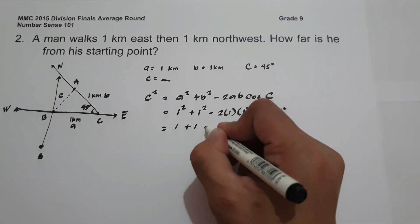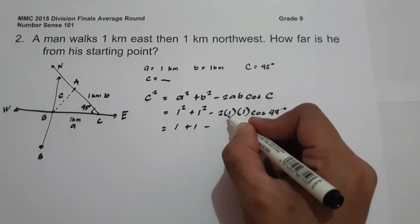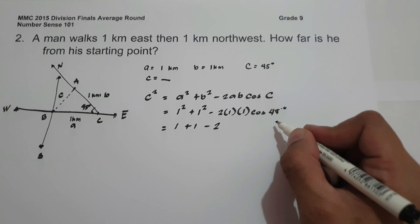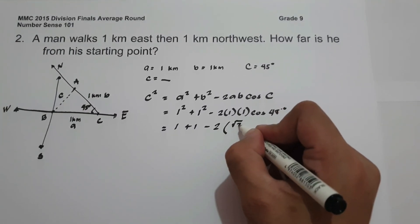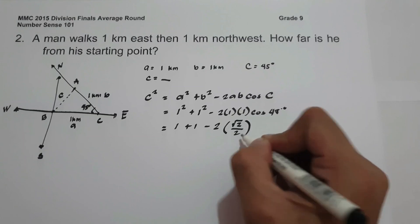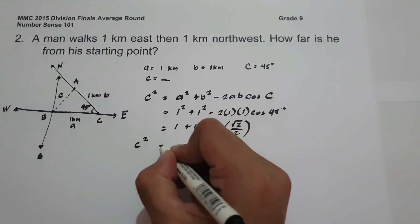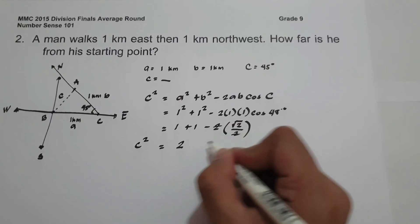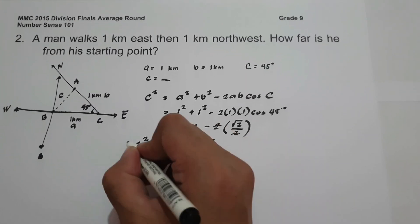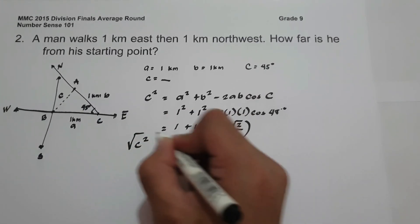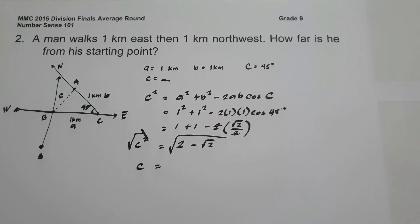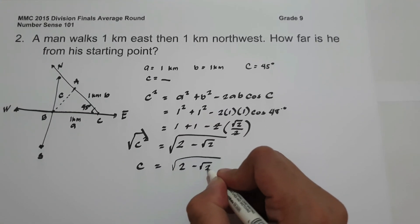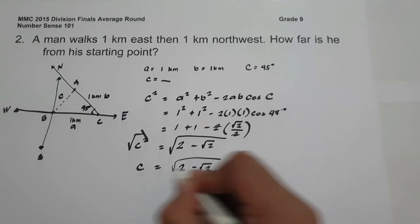Simplifying: 1 squared is 1, and 2 times 1 times 1 is 2. Cosine 45 is square root of 2 over 2. So c squared equals 1 plus 1, that is 2, minus square root of 2. Taking the square root of both sides, the value of c is square root of 2 minus square root of 2 kilometers. This will be our answer.